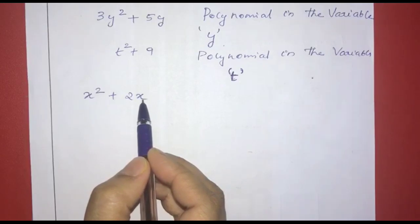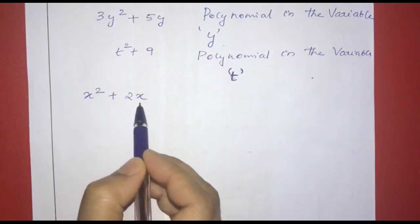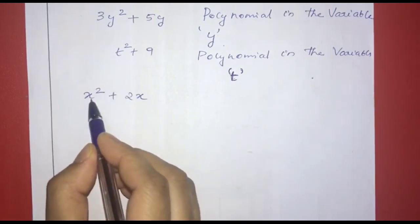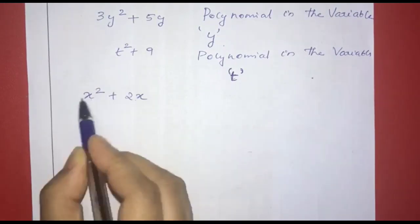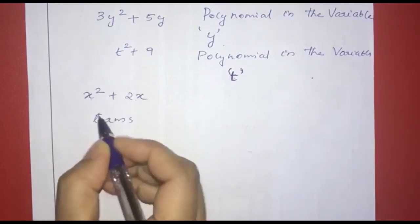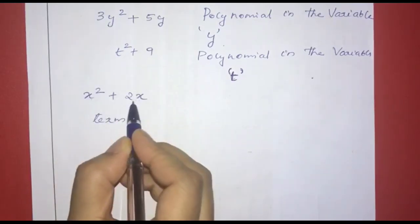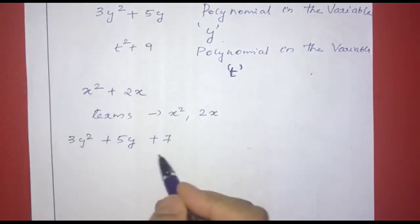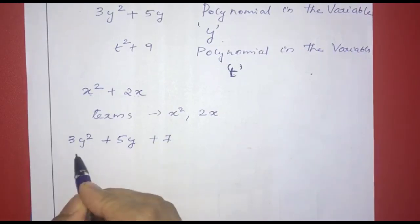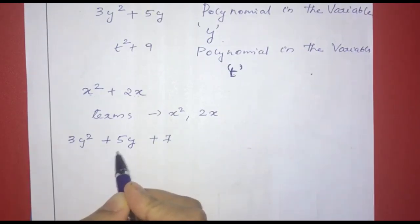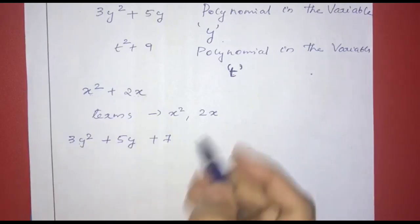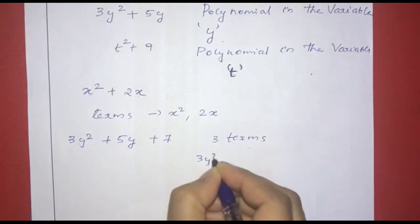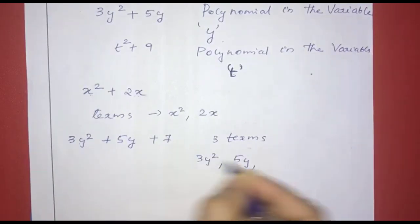Consider the polynomial x squared plus 2x. Now let us look at the terms. In x squared plus 2x, there are 2 terms. For 3y squared plus 5y plus 7, how many terms are there? 1, 2, 3 — this has 3 terms. The first term is 3y squared, the second is 5y, and the third is 7.